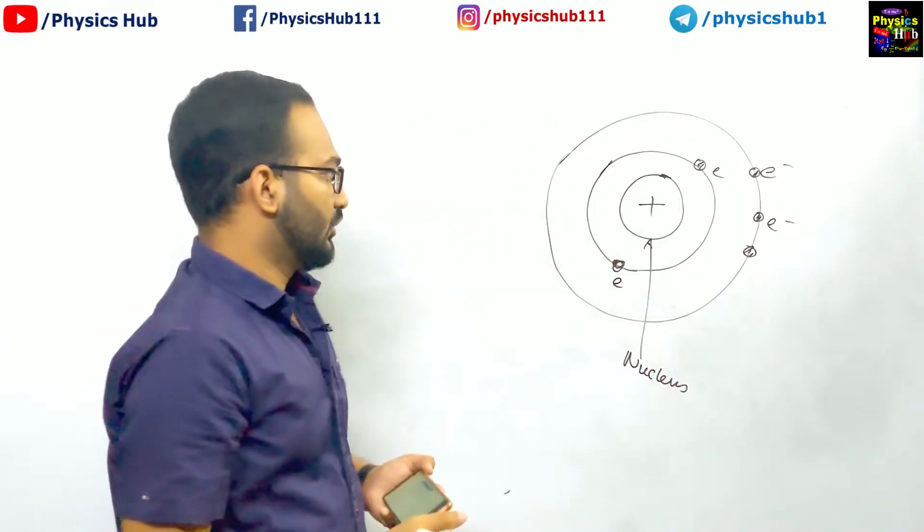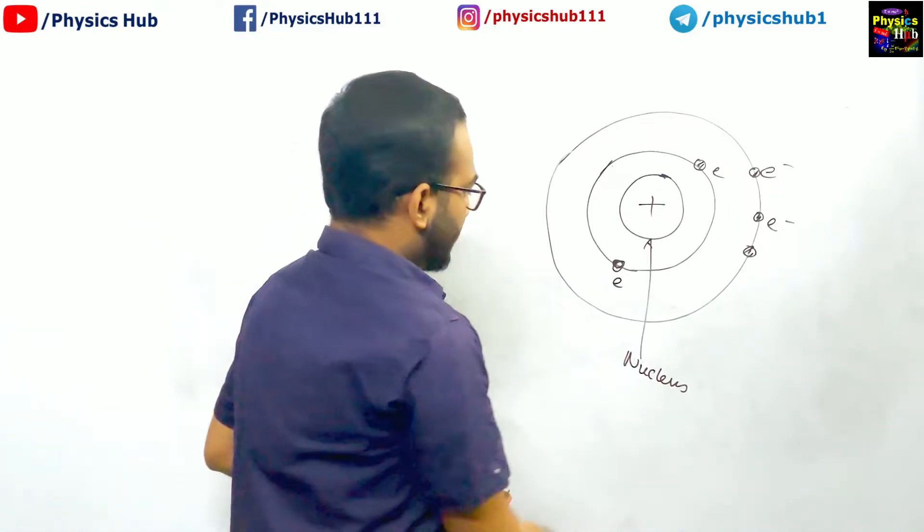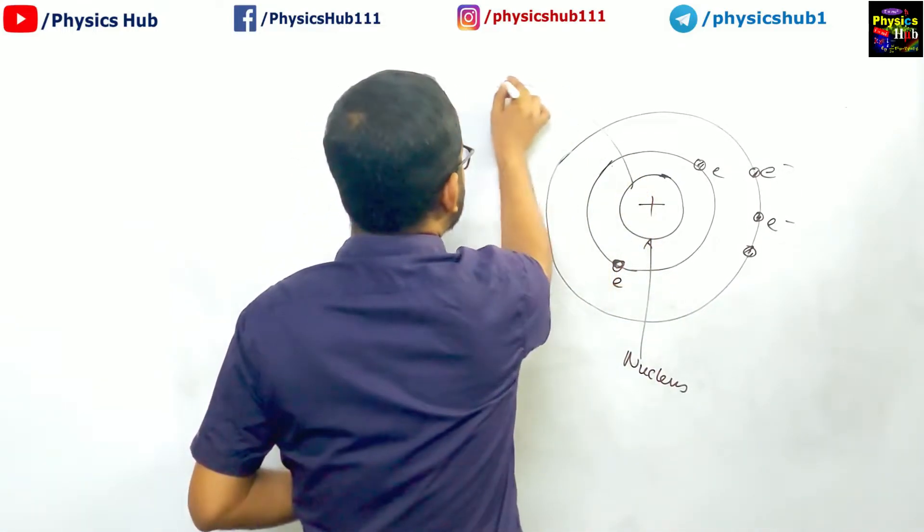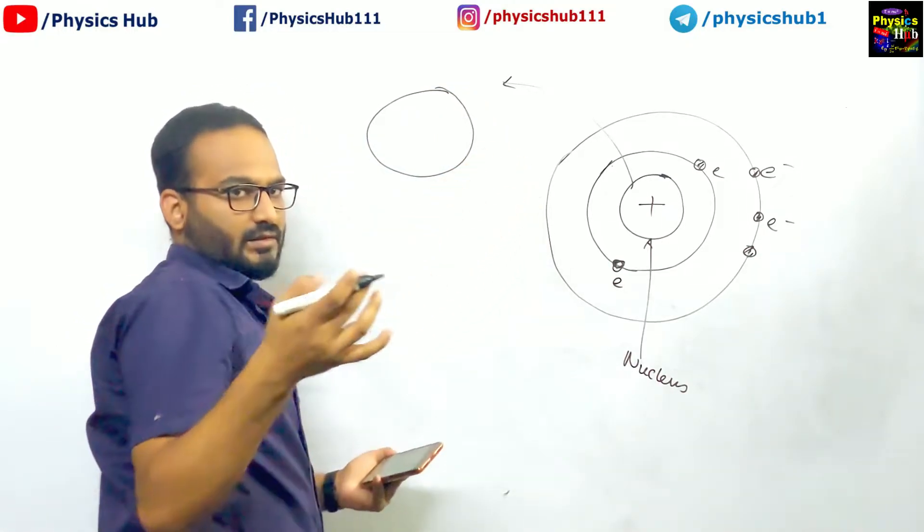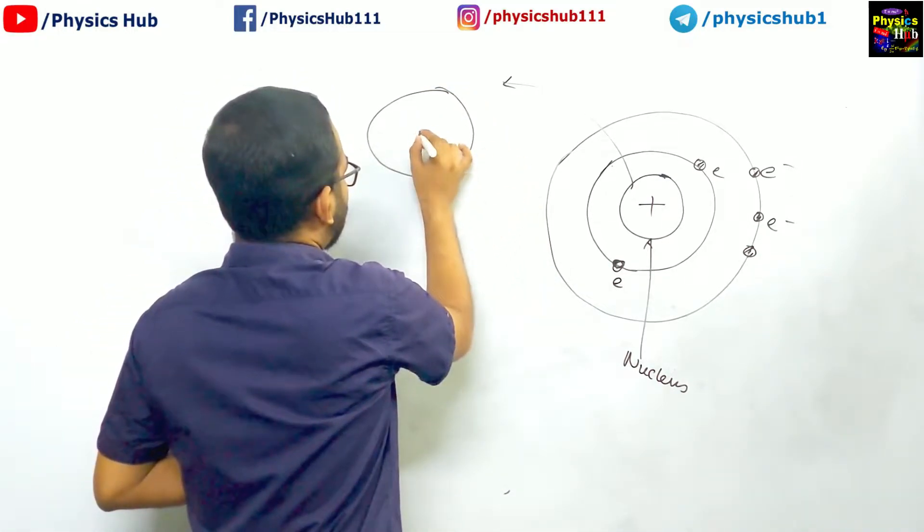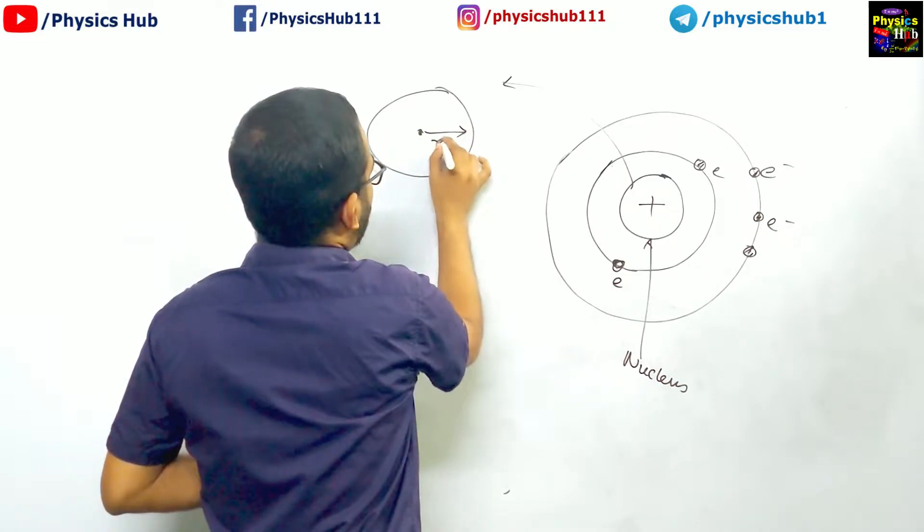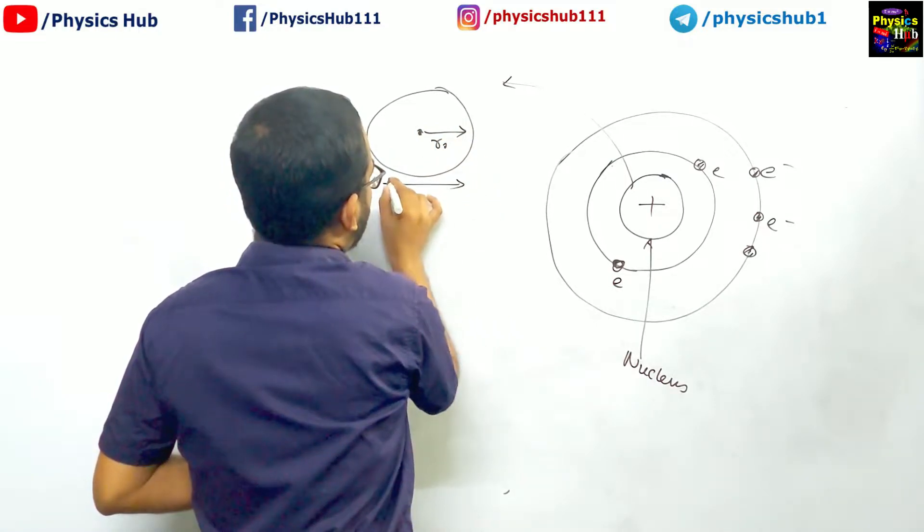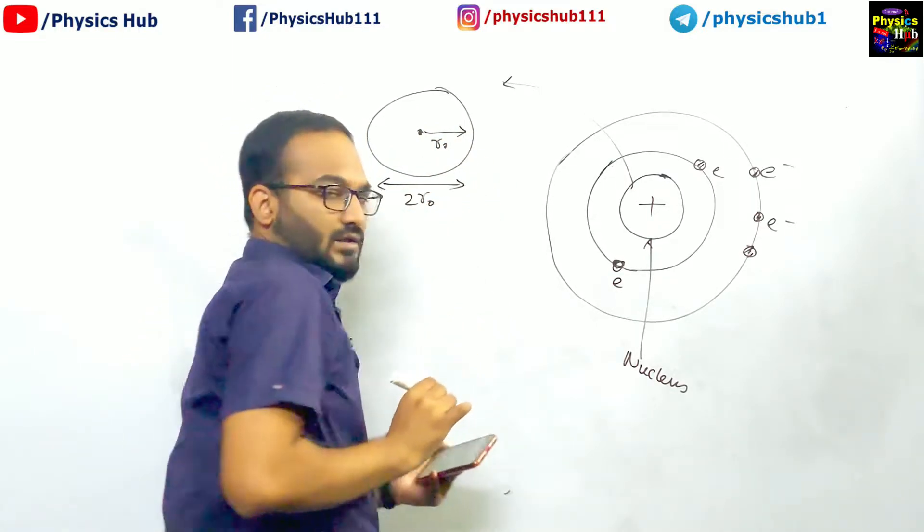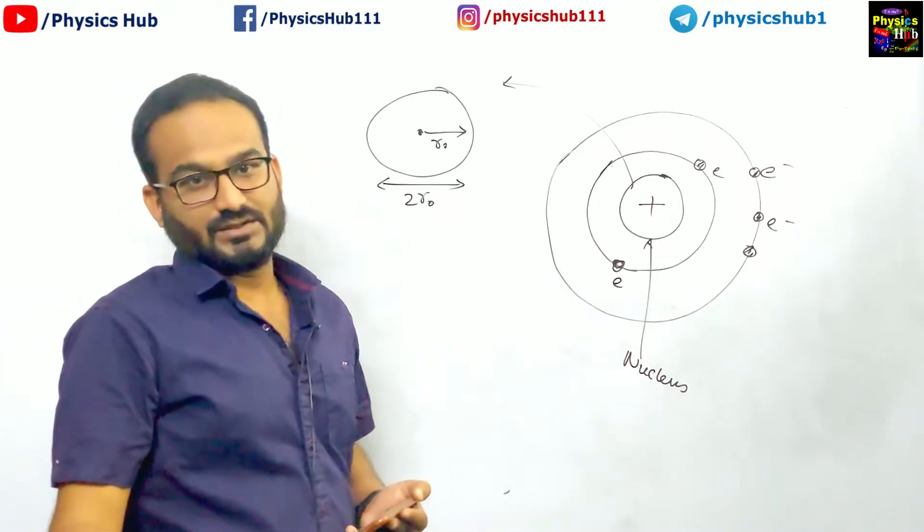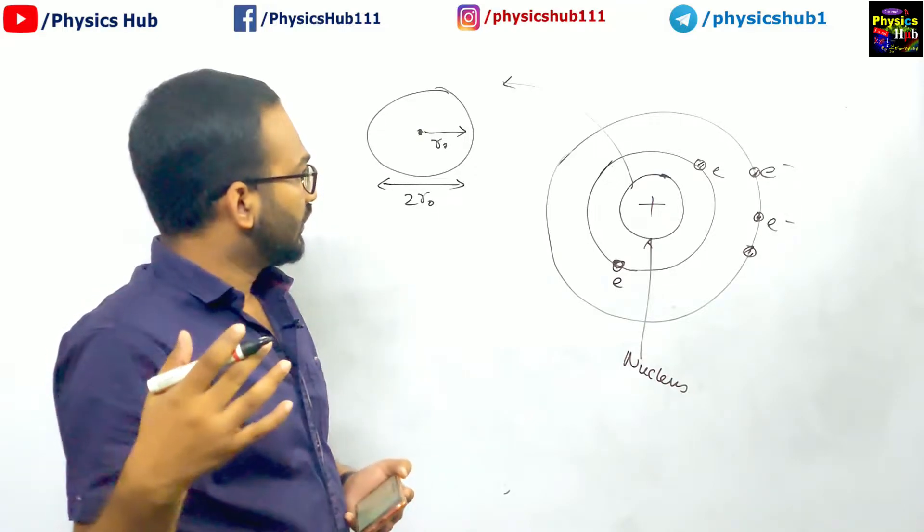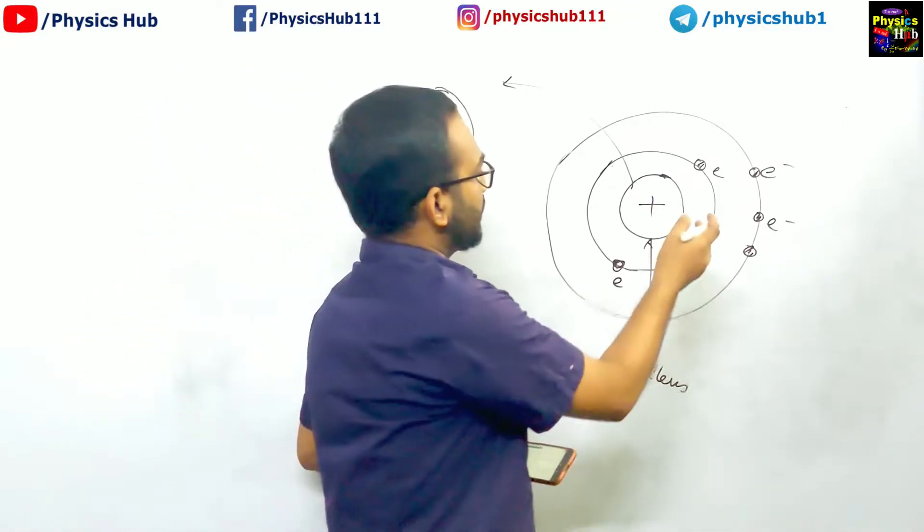So let us consider this nucleus. We are considering that this is the nucleus, spherical for the time being. If we consider the radius r0, the total diameter will be two times r0. Now we can utilize the position-momentum uncertainty relation to prove that electrons cannot reside inside the nucleus.